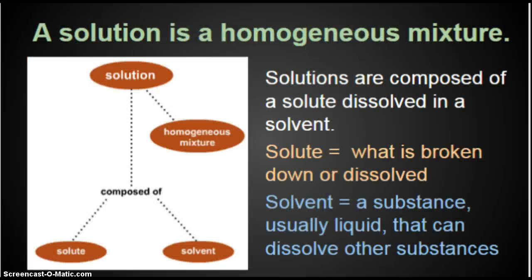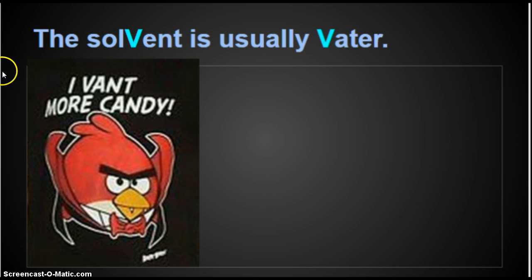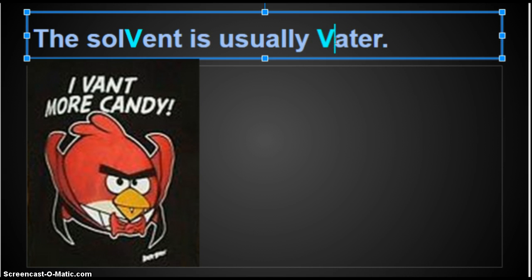It's a silly way to remember it, but it's how I remember. Look at these words: solution, solute, solvent. The solute dissolves in the solvent to make a solution. It gets a little hard to keep track of them, so I look at the V in solvent — in some languages like German, the W makes the V sound, so instead of 'water' it's 'vater.' If you think of a bad Transylvania movie accent, the solvent is usually the water, and it's what does the dissolving.